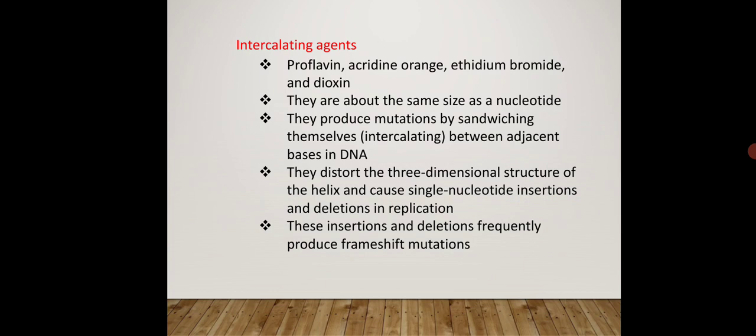Intercalating agents produce mutation by inserting themselves between the base pairs. Their polycyclic ring structure creates disturbance between the normal bases. They insert themselves between adjacent bases in the DNA and disrupt the 3D structure of the double helix.